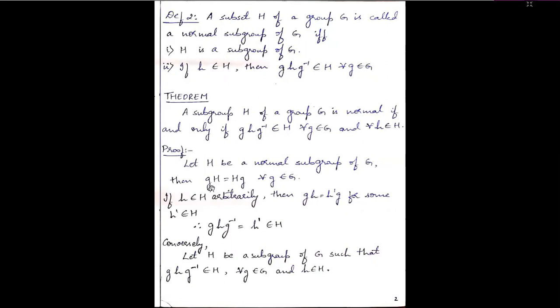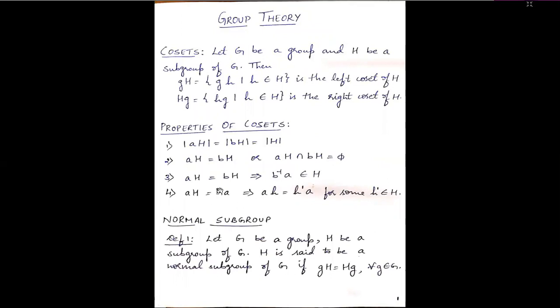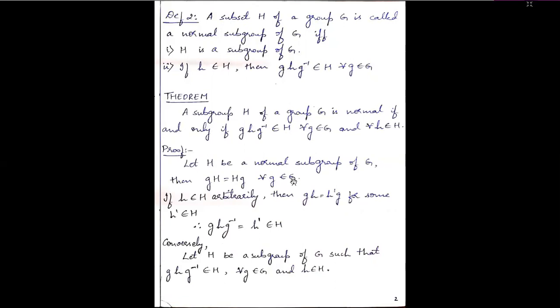We assume let H be a normal subgroup of G. Then by the first definition, the left coset equals the right coset: gH equals Hg for all g belonging to G. If h belongs to H arbitrarily, then gH equals h'g for some h' belonging to H — this is one of the properties of cosets. Now multiplying g⁻¹ on the right side, we get gHg⁻¹ equals h', and since h' belongs to H, gHg⁻¹ also belongs to H. So the first part is done.